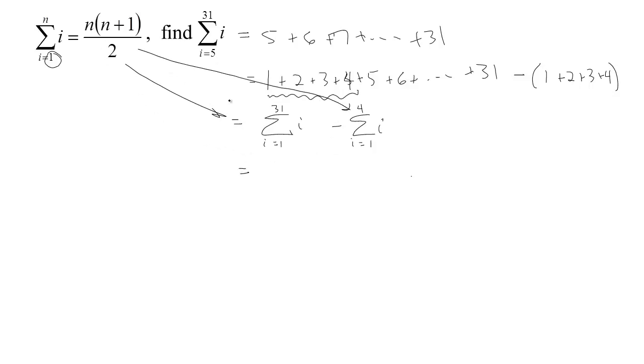So from the first one, in the first one, n is 31, so we get 31 times 31 plus 1 would be 32 over 2 minus, in this case, n is 4, so we get 4 times 5 over 2.